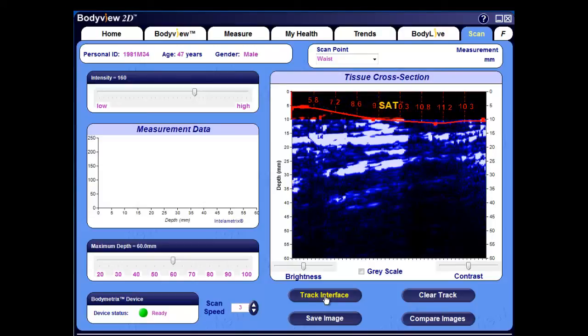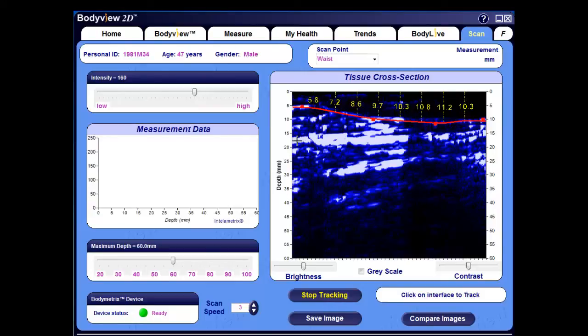We have now quantified the superficial adipose tissue layer from the top of the image to the fascia. Next, let's track the actual fat muscle interface signal here at 17 millimeters and adjust it as needed. We'll click the Track Interface button first, and go directly to that second band, and then click. Again, when you're satisfied with the tracking, click the Stop Tracking button. The layer between the two red tracking markers represents deep adipose tissue, or DAT.